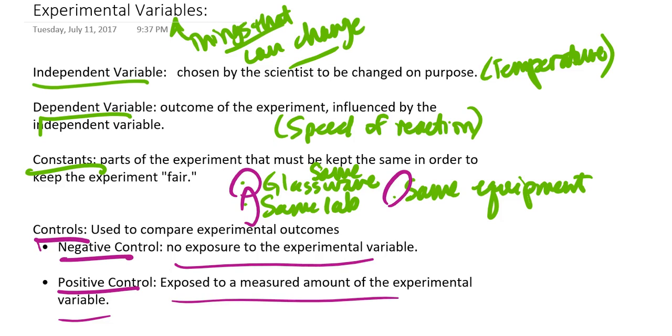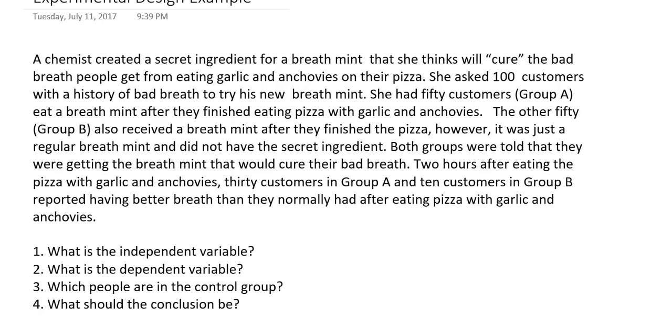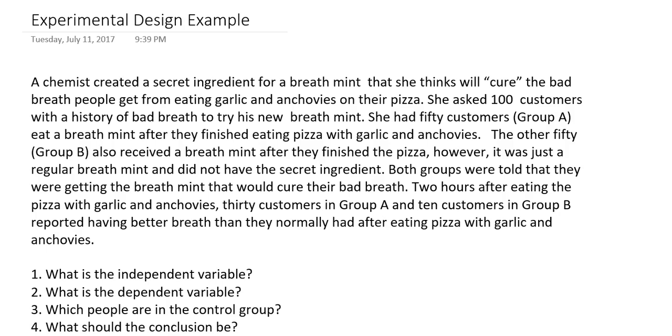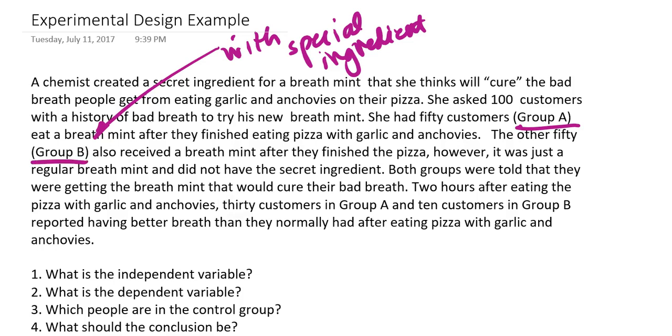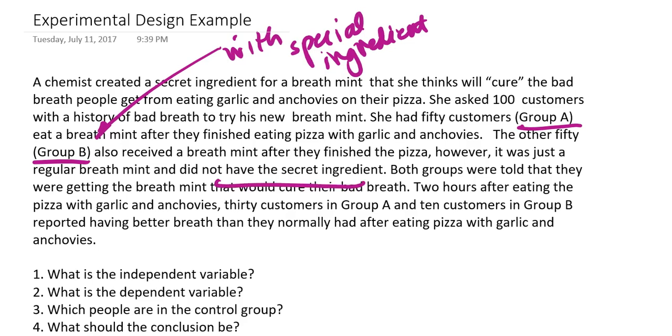Now, I know that can seem a little confusing, but really the best way to explain it is to give you guys a bit of an example of where that applies. So, let's take a look at this example right here. This is an experiment that was done to determine whether or not a secret ingredient in a breath mint will actually cure people of bad breath once they eat pizza with garlic and anchovies. So, in this particular scenario, we have a scientist and she's taken 100 customers. She's divided those 100 customers in half. Now, 50 of those customers, which she puts in what she calls group A, will receive the breath mint with the special ingredient in it. However, the other 50, which she puts in group B, well, they're going to get a regular breath mint with no secret ingredient.